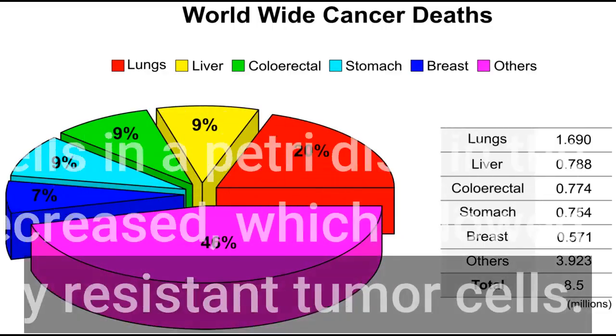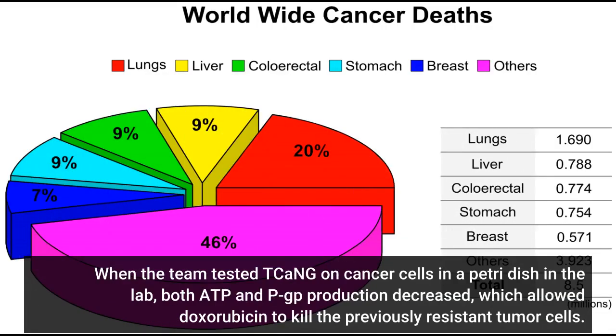When the team tested TCANG on cancer cells in a petri dish in the lab, both ATP and PGP production decreased, which allowed doxorubicin to kill the previously resistant tumor cells.